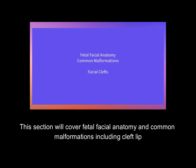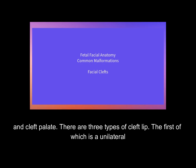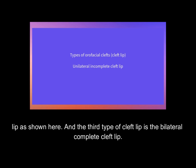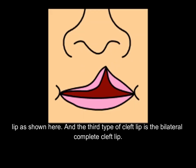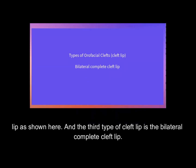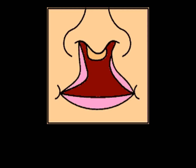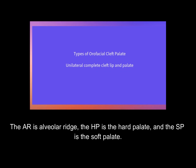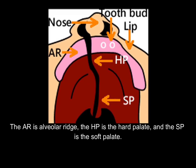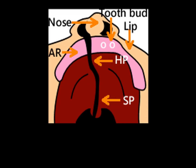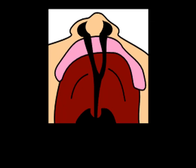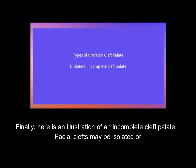This section covers fetal facial anatomy and common malformations, including cleft lip and cleft palate. There are three types of cleft lip: the first is a unilateral complete cleft lip; the second is the unilateral incomplete cleft lip; and the third is the bilateral complete cleft lip. The types of oral facial cleft palates include the unilateral complete cleft lip and palate — where AR is the alveolar ridge, HP is the hard palate, and SP is the soft palate — the bilateral cleft lip and cleft palate, and an incomplete cleft palate.